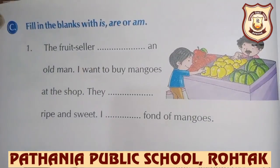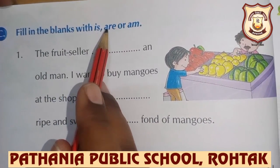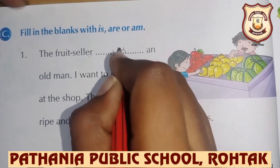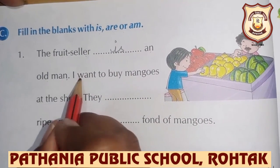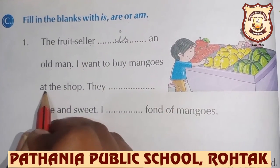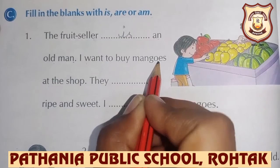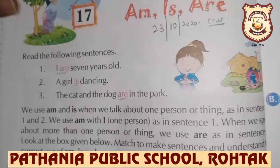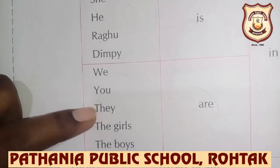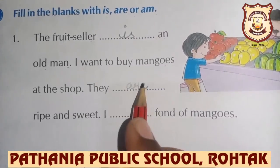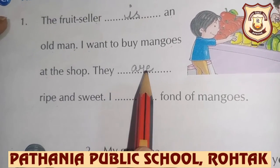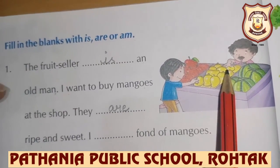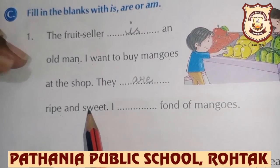Now question number C: Filling in the blanks with Is, Are or Am. The fruit seller is an old man. I want to buy some mangoes at the shop. They are — here 'they' کے ساتھ کیا use ہوتا ہے? Are. They are ripe and sweet. zyada کے بارے میں بات ہوگی تو ہم لکھیں گے 'are'. The fruit seller is an old man, because یہاں پہ ہم single fruit seller کے بارے میں بات کر رہے ہیں. They are sweet and ripe — who? Mangoes.